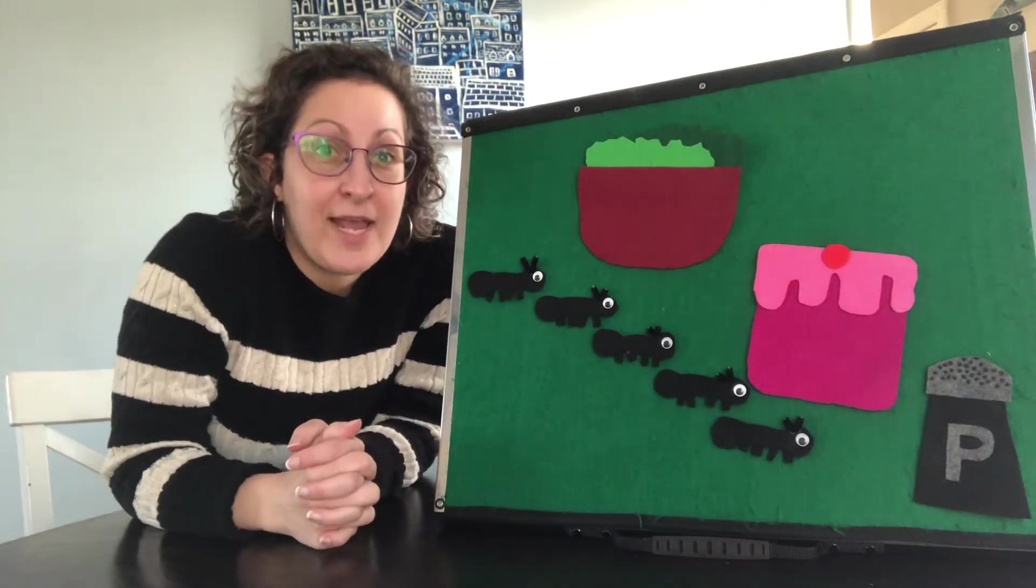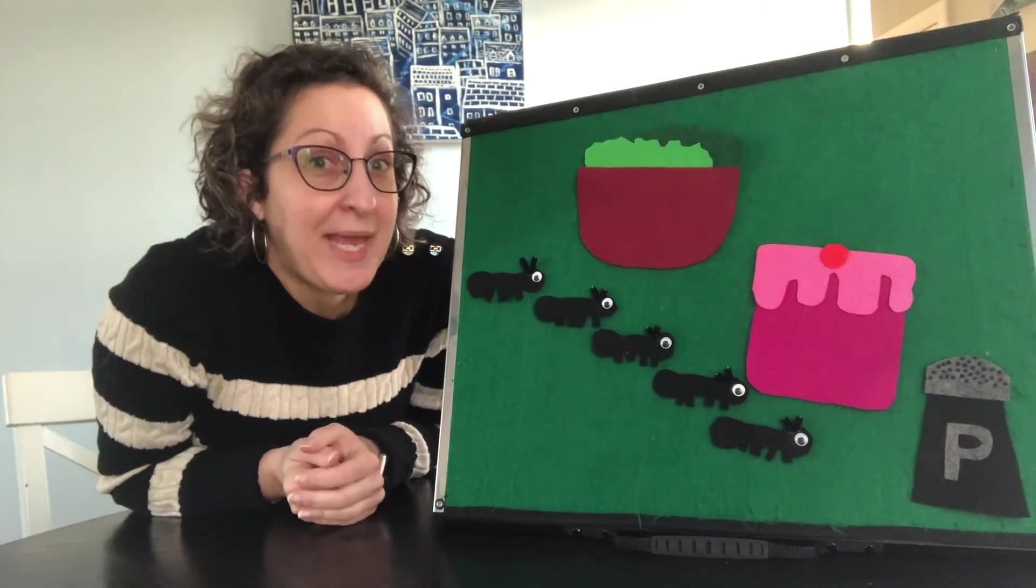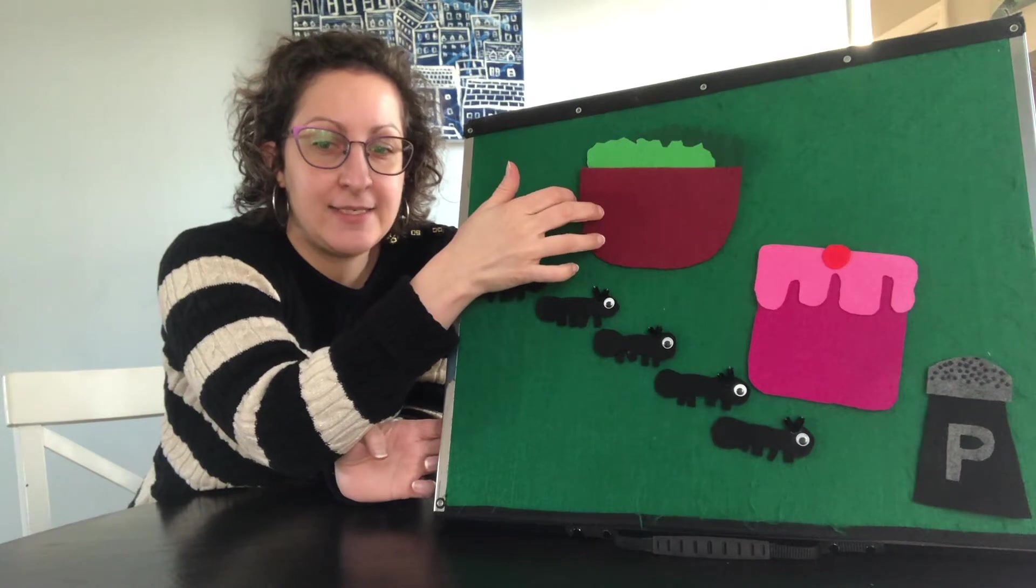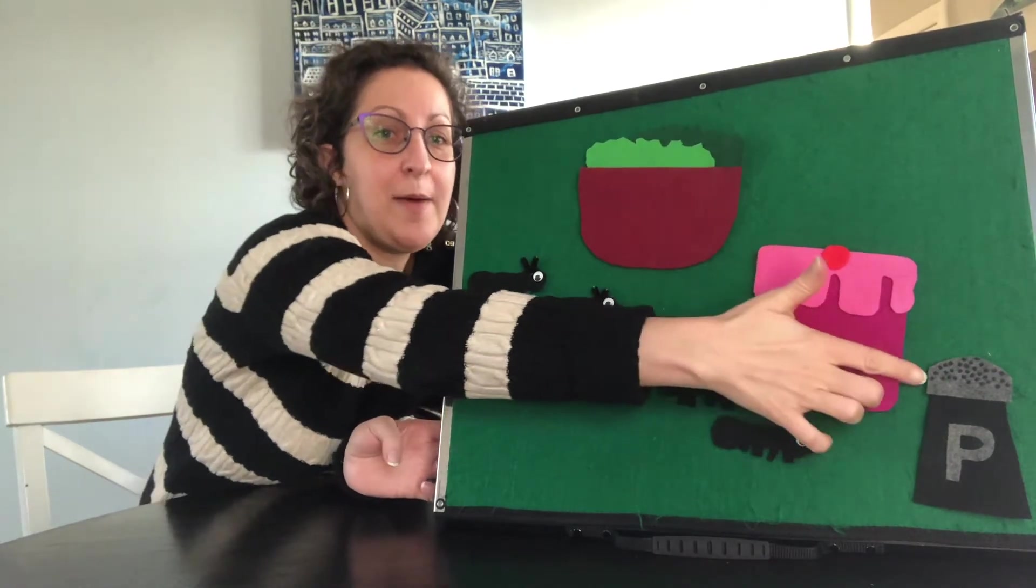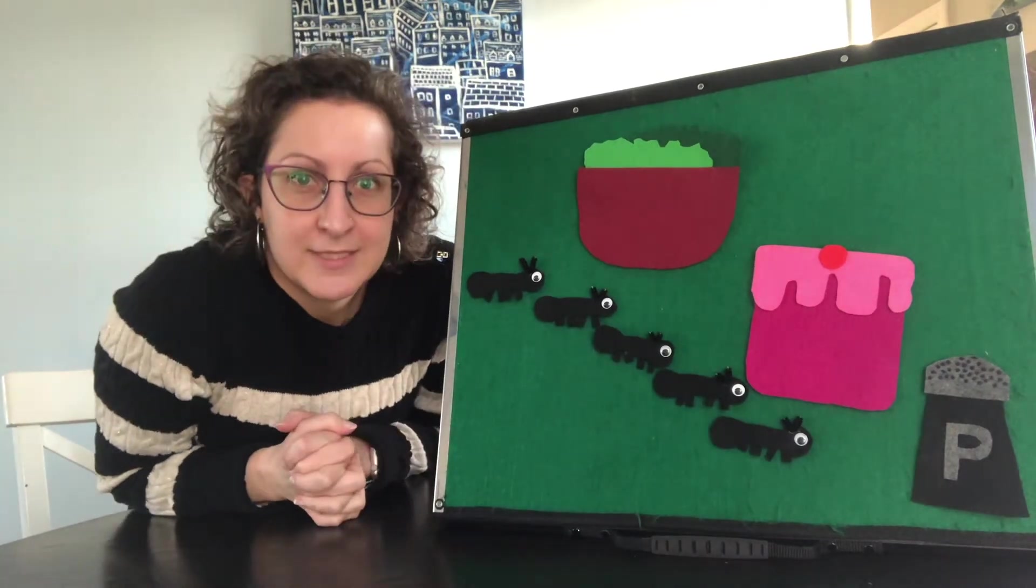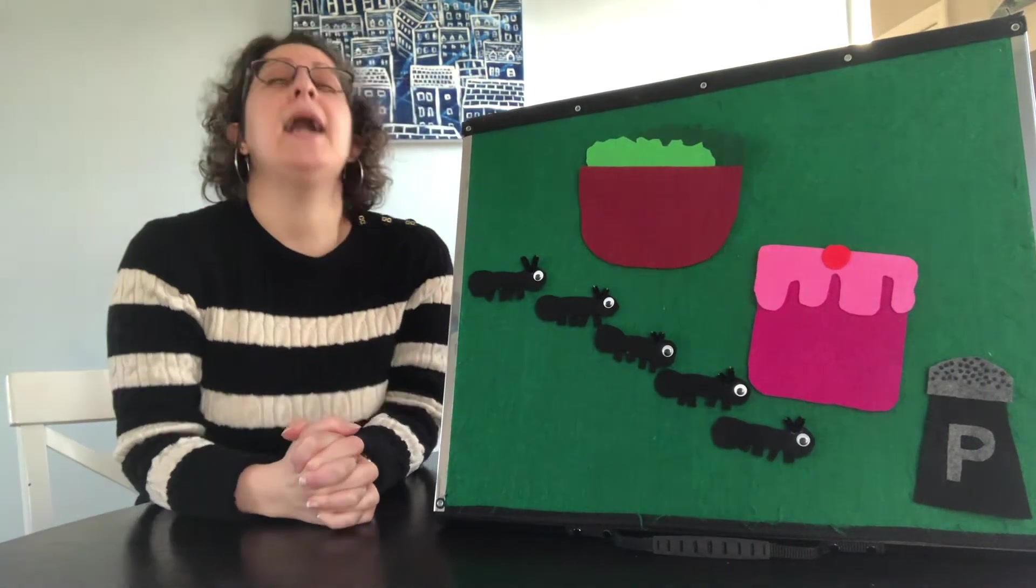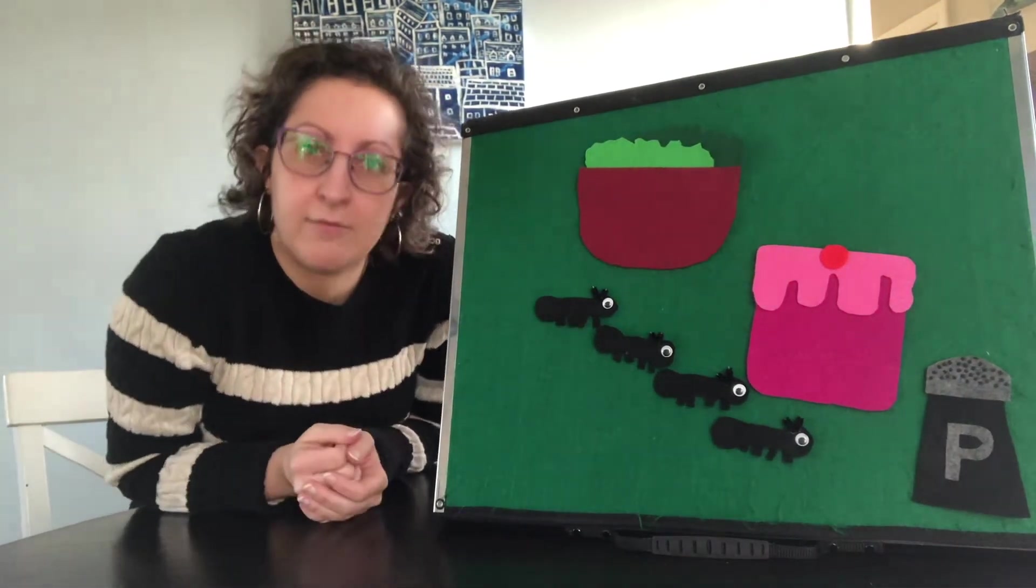So five hungry ants marching in a line. They came across a picnic where they could dine. They crawled into the salad. They crawled into the cake. They crawled into the pepper. That was a mistake. I'm gonna sneeze. You ready? Ah, ah, ah, choo!